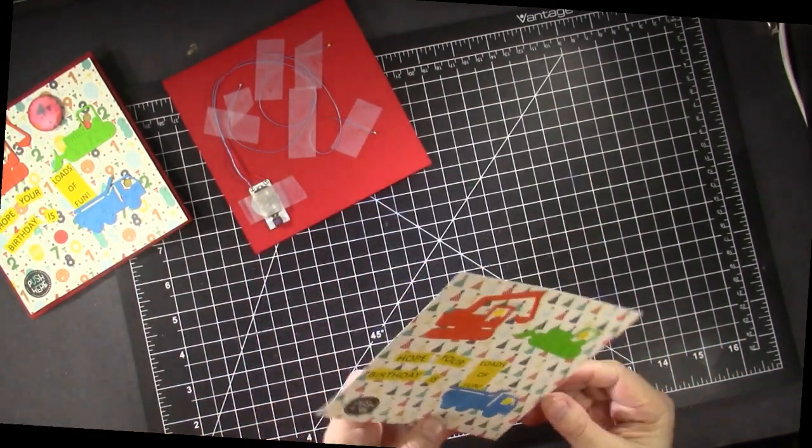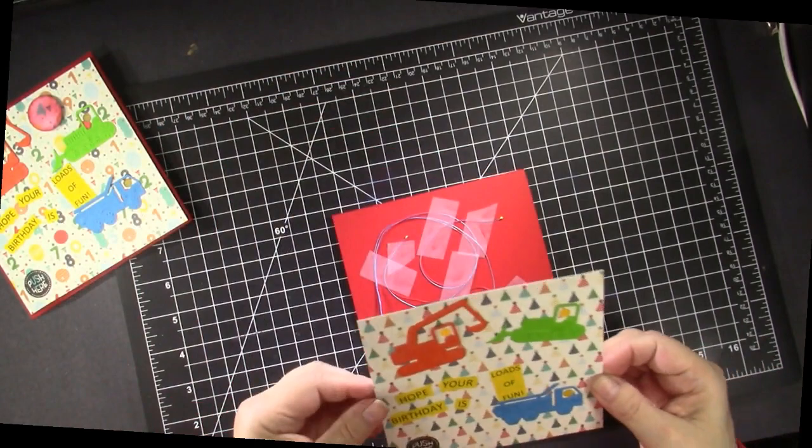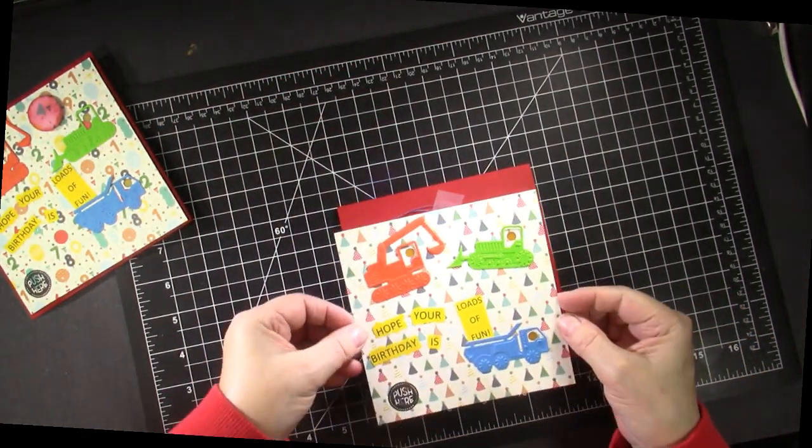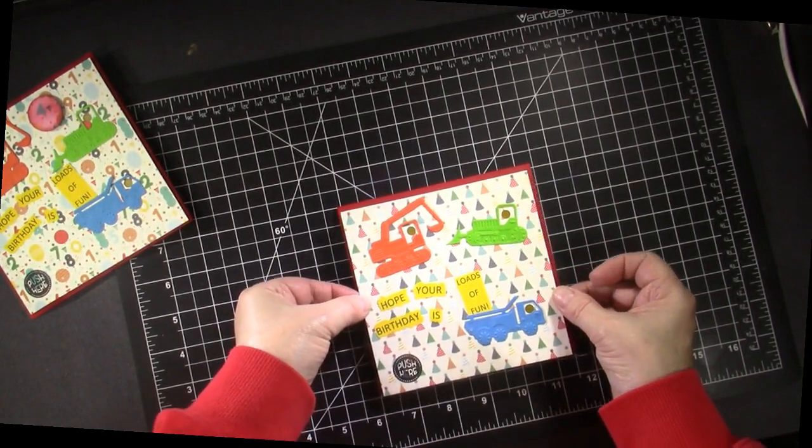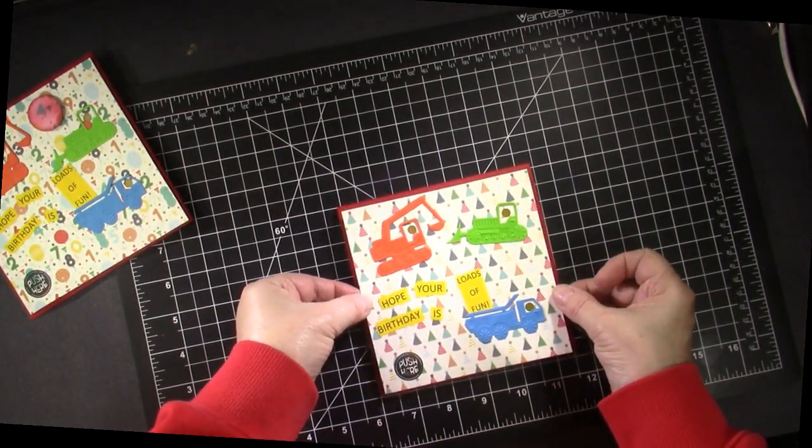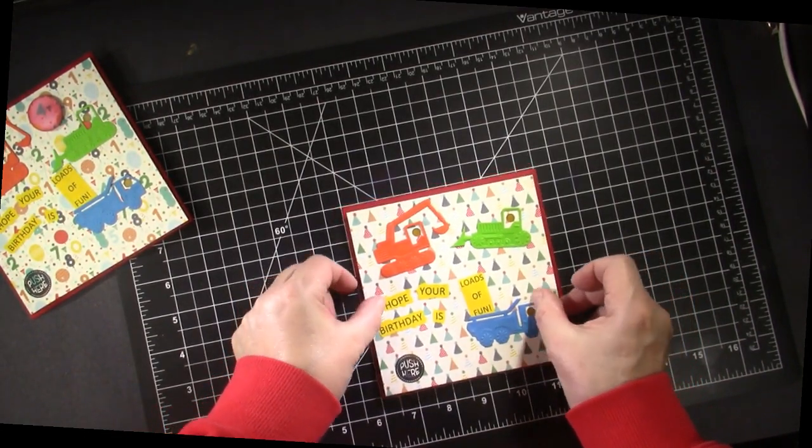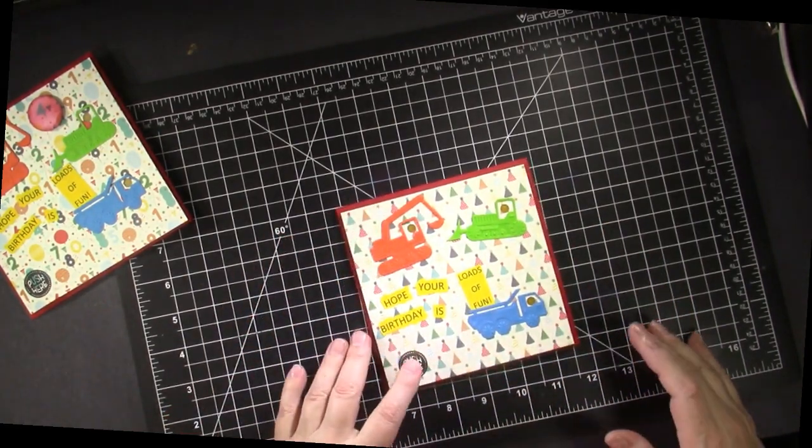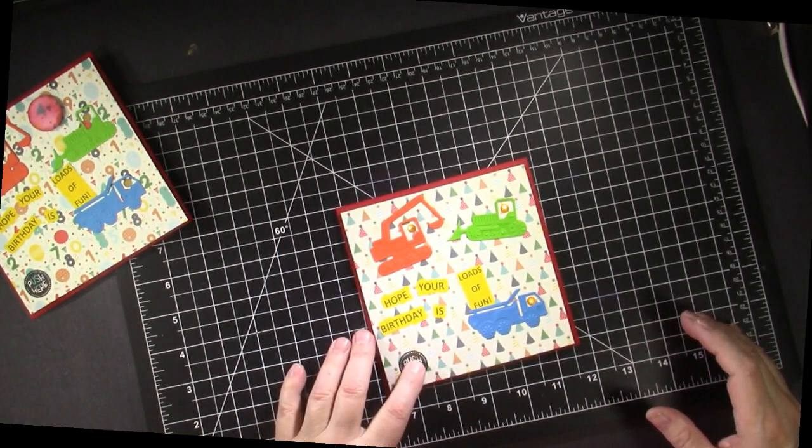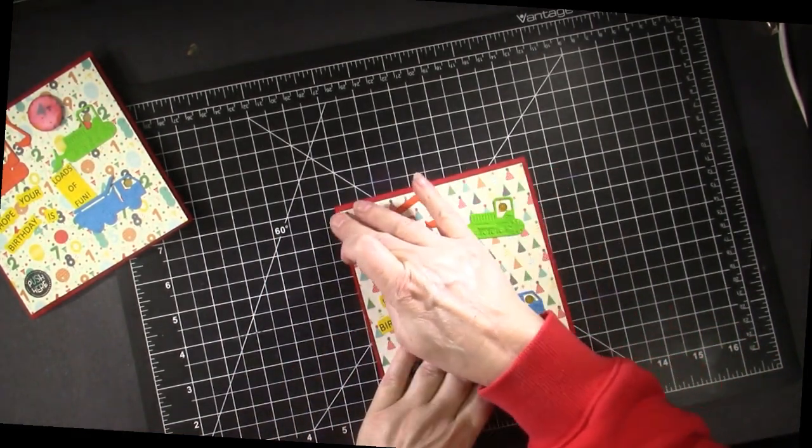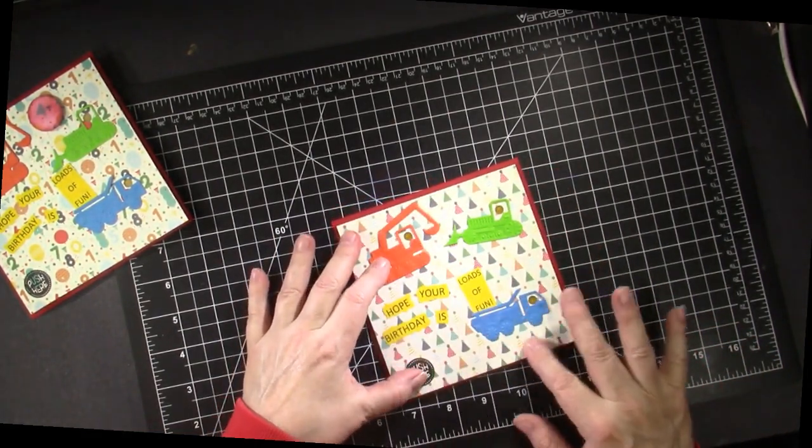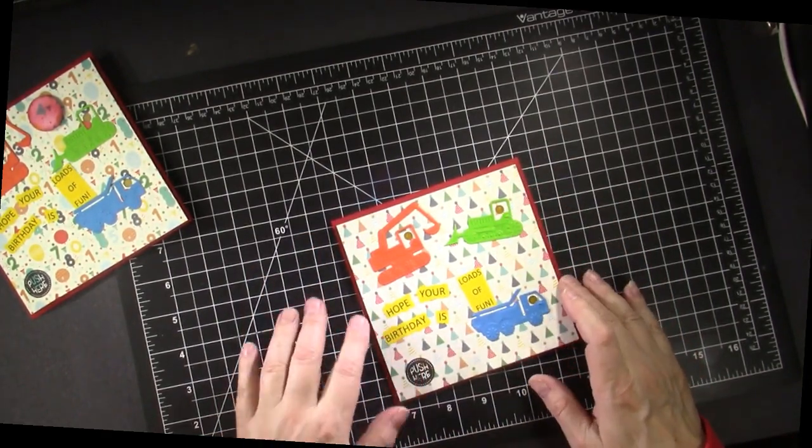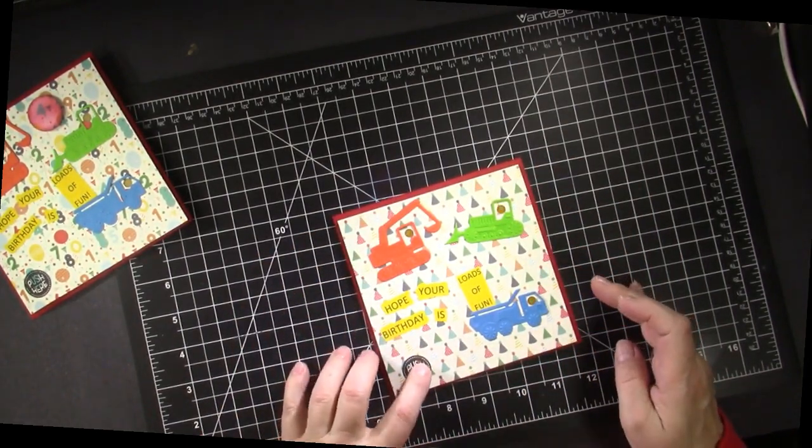And now we're going to take this and I want an even border, so I'm going to stand up to do this, around on all four edges. And if we push, you can see the lights and that sticky foam tape has raised it enough and also will attach it. I just love to do that.